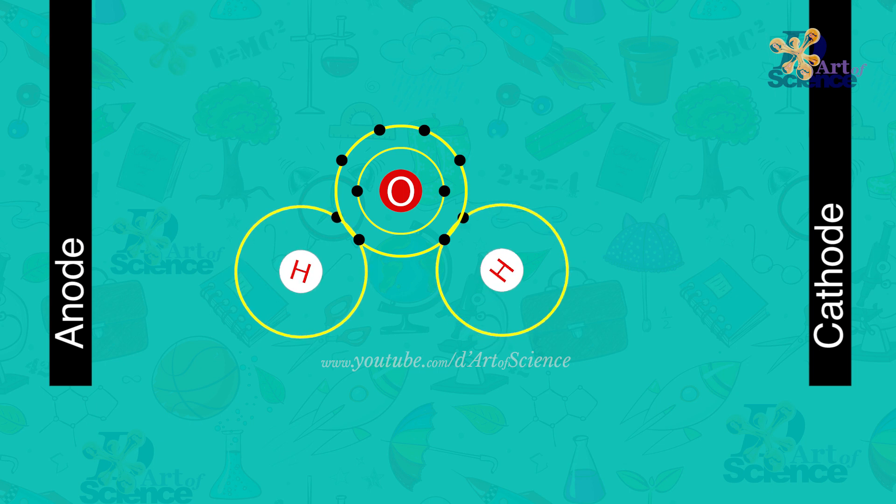The electrons of both the hydrogen atoms are shared with the electrons on the oxygen to form the bond. You can see the electrons remain more with the oxygen atom and end up giving it a negative charge, while leaving the hydrogen with a positive charge.